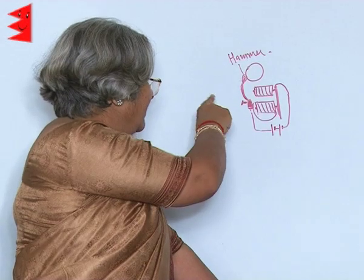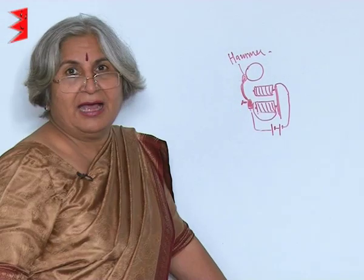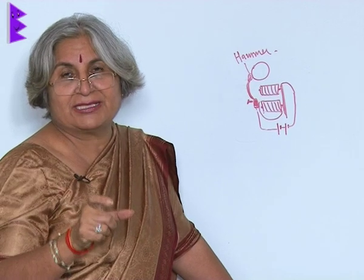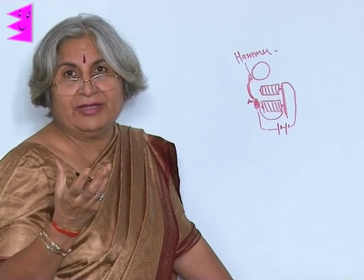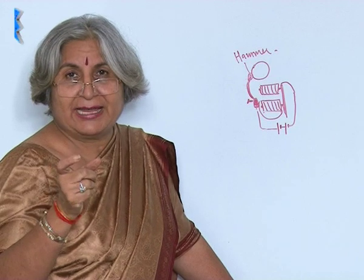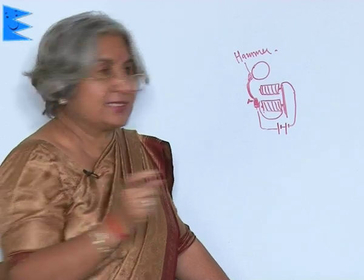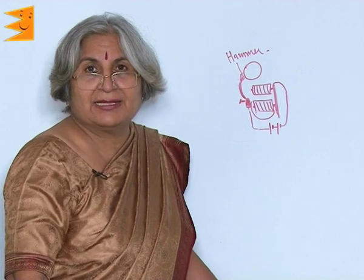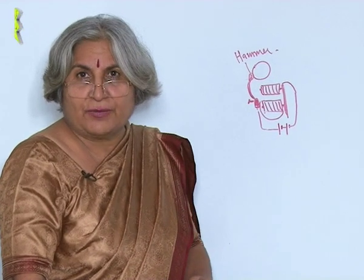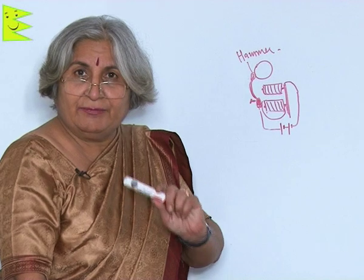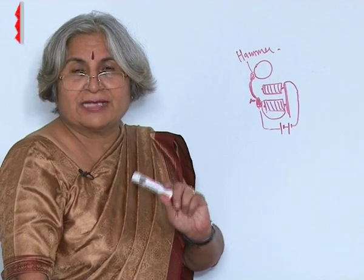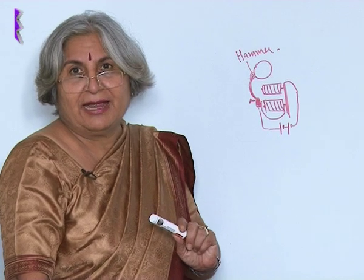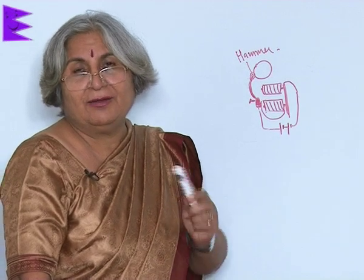As a result they attract this iron strip and it strikes — the hammer strikes the gong and this is how we hear the sound. But as it strikes, the circuit breaks, then it is no longer connected with the screw and as a result the sound stops. So in a minute many such small sounds are produced due to the formation of the electromagnet, and that is how the call bell works.